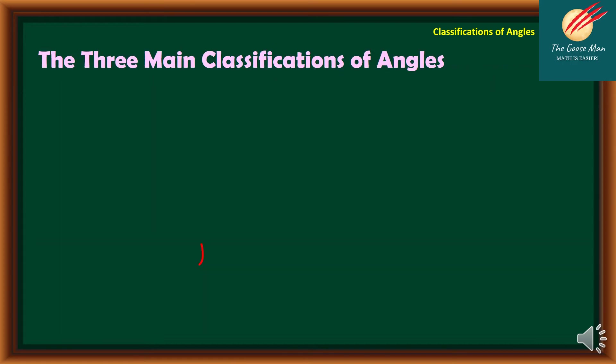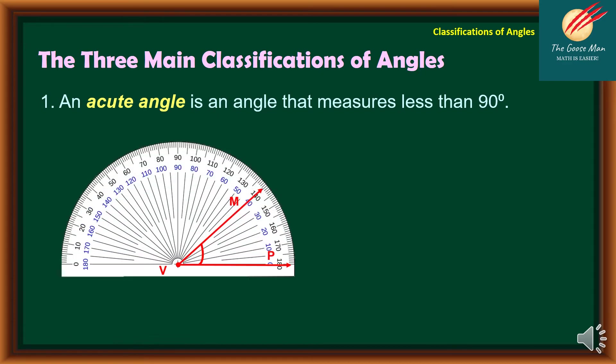We will talk about three main classifications of angles in this topic. The first one is an acute angle. It's an angle that measures less than 90 degrees. In this example, we have angle MBP, and the terminating side is actually lying on 40 degrees.